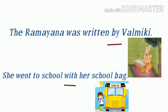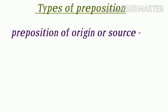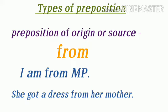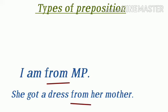Next है preposition of origin और source — ऐसे preposition जो उत्पत्ति या स्रोत को बताते हैं, उन्हें कहते हैं preposition of origin और source। इसके लिए 'from' यूज़ किया जाता है — originality में भी और source में भी। जैसे: I am from MP — मैं MP से हूँ, यानी हमारा origin MP है। And: She got a dress from her mother — उसे उसकी मम्मी से एक dress मिली, तो dress मिलने का source क्या था? उसकी मम्मी।